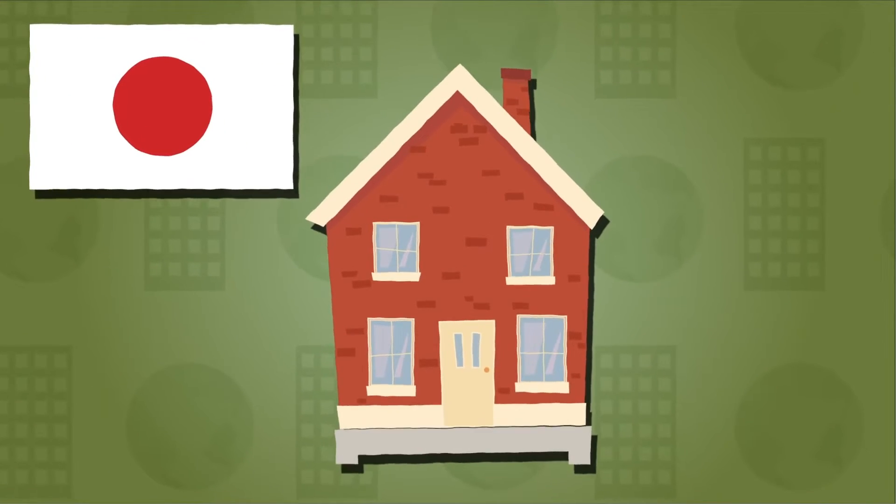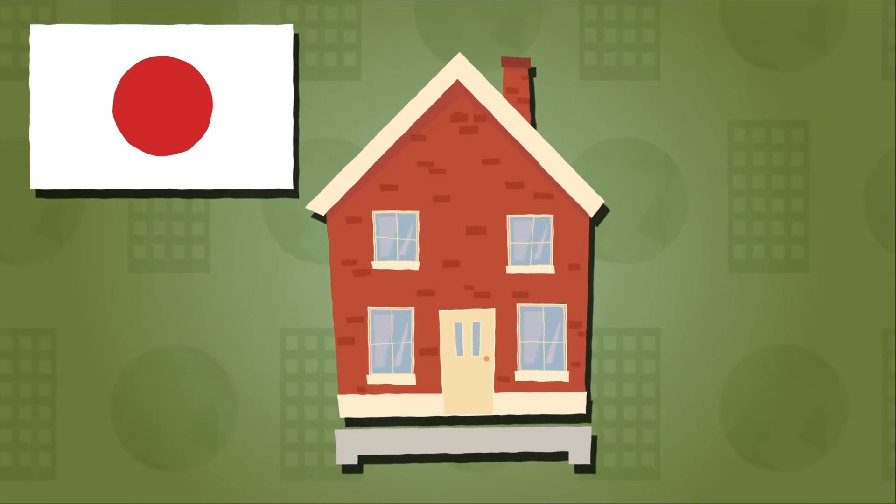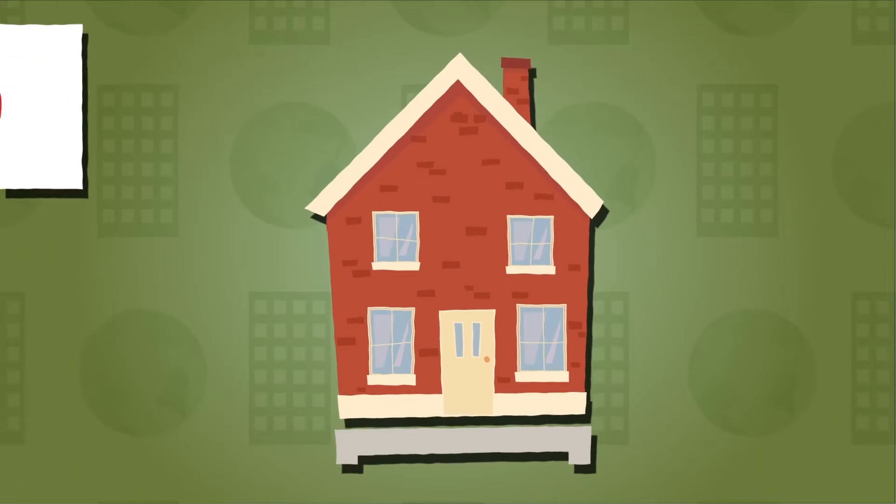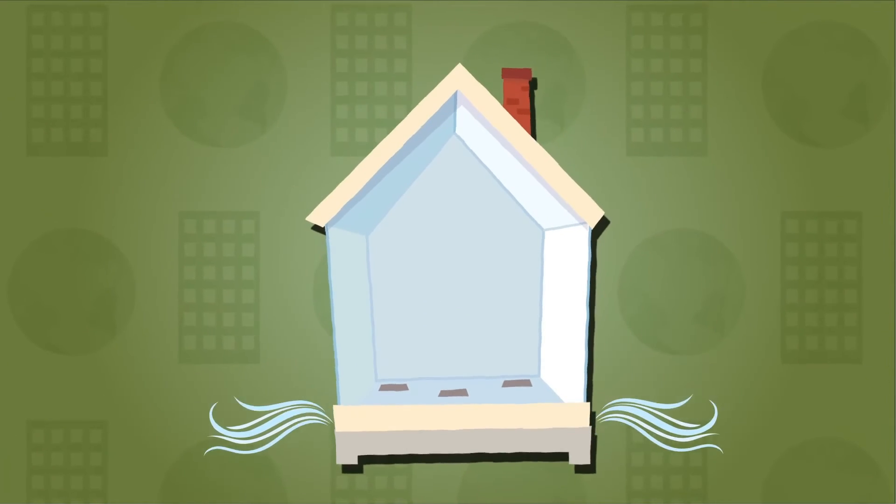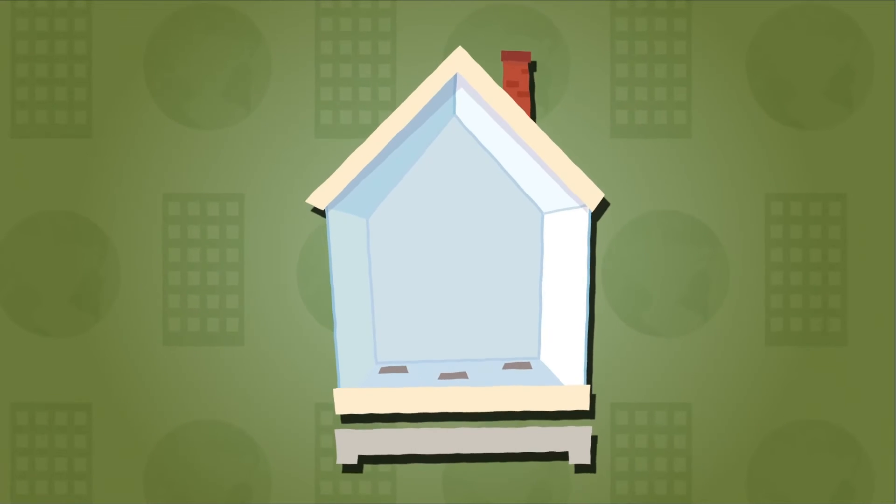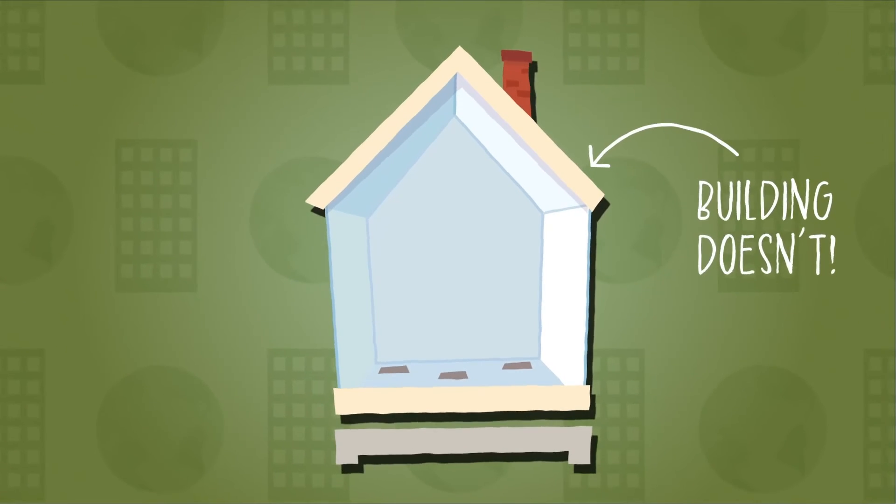There are sensors in the ground that know when an earthquake is coming and they send a signal to the cushion so it fills with air. The air pushes the building away from its foundations so the ground shakes but the building doesn't. How cool!